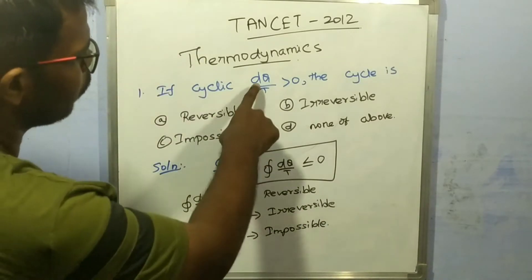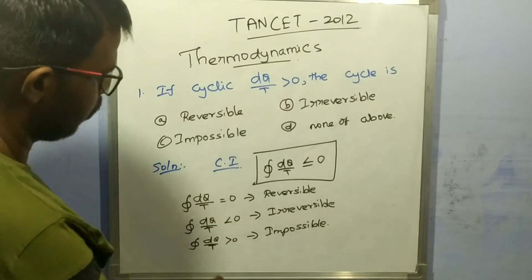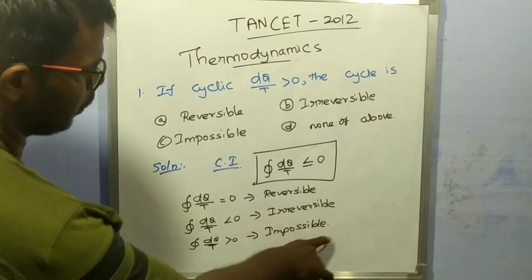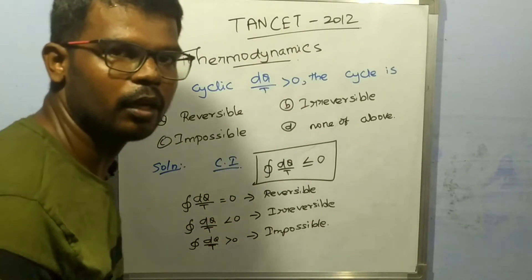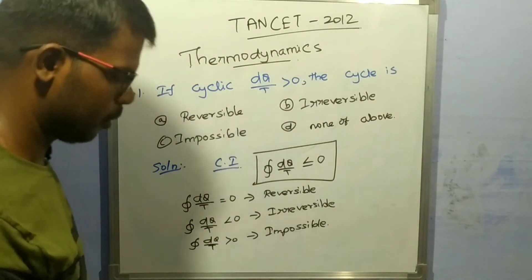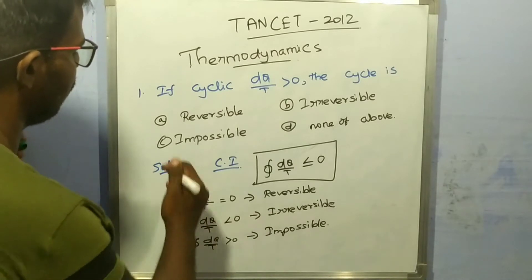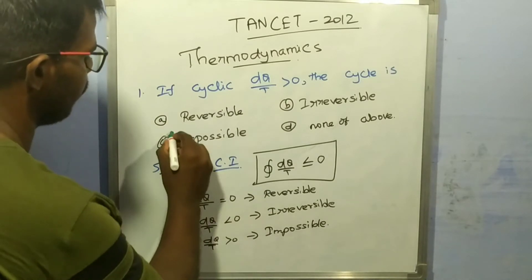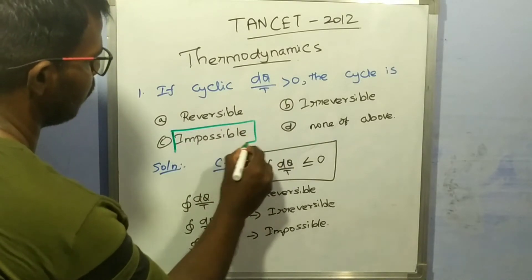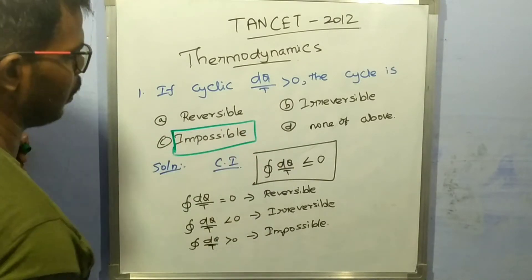The cyclic integral of dQ/T greater than zero is impossible. So the correct option is C — impossible.